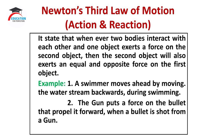Now let us try to understand Newton's third law of motion. It states that whenever two bodies interact with each other and one object exerts a force on the second object, then the second object will also exert an equal and opposite force on the first object. The examples of Newton's third law of motion are discussed as under.